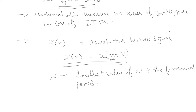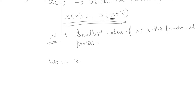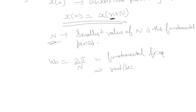So n intuitively means we are talking about discrete time signals, and t means continuous time signals. N is the fundamental period, and ω₀ = 2π/N is the fundamental frequency, with units of radians per sample.